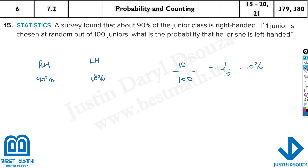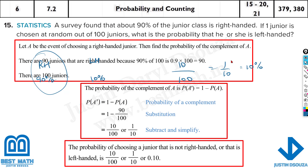They have given in percentages, so it's very simple. Right-handed is 90%, so if you choose a student randomly out of 100, one who is right-handed has a 90% chance, whereas left-handed is only 10% or 1 by 10, which is 0.1. These are all correct answers — it depends on how the option is given. You might have 1 by 10 or 0.1, or if it's a percentage, just multiply by 100.